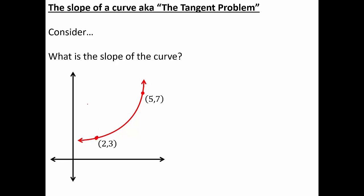At any given point on the curve, we can draw a tangent line — a line that touches the curve at exactly one point. We can measure the slope of that tangent line to represent the slope at that point. A tangent line drawn higher up on the curve will be steeper than one drawn lower. For every point on the curve there is a slightly different slope to the tangent line, so asking for the slope of a curve is actually asking an infinite set of different questions.